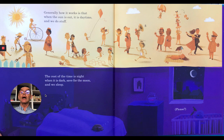Generally, how it works is that when the sun is out, it is daytime and we do stuff. The rest of the time is night, when it's dark, save for the moon, and we sleep. Oh look, there's a baby awake. I wonder if the baby's asleep.